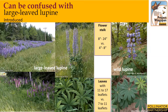Wild lupine can be confused with large-leaf lupine, which is an introduced species. Large-leaf lupine can grow up to three and a half feet tall compared to wild lupine's two and a half feet. The flower stalk on large-leaf lupine grows to be eight to 24 inches versus wild lupine's four to eight inches, and its leaves have 11 to 17 leaflets versus the native species that only has seven to 11 leaflets.